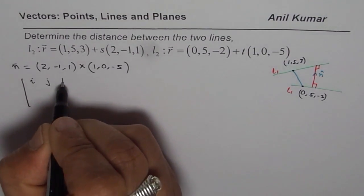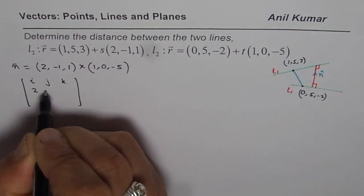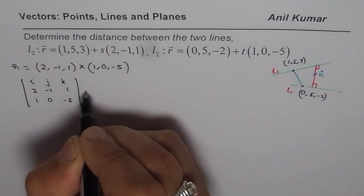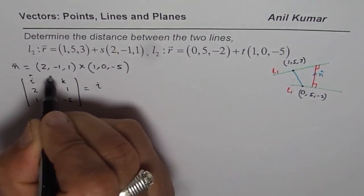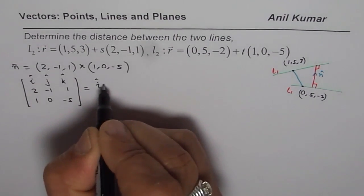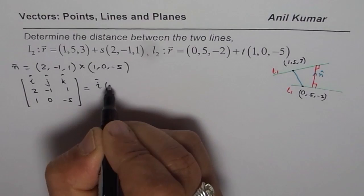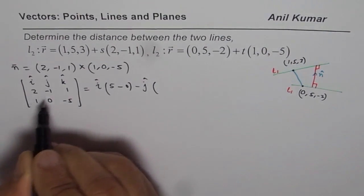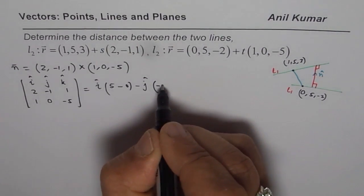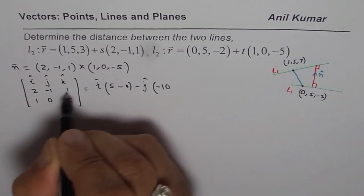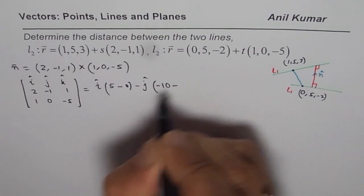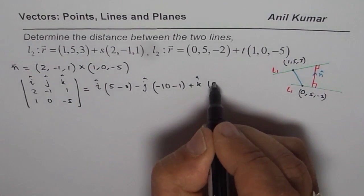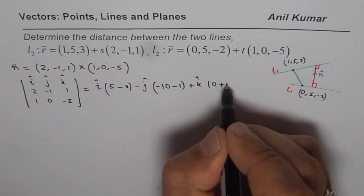So, we will say i, j, k and here we have 2, -1, 1 and 1, 0, -5. So, I will write this as i. These are the unit vectors, i, j, k. And 1 times -5, so that becomes plus 5 minus 0 minus j. 2 times -5 is -10, this is with negative and minus of minus becomes -1, plus k. 2 times 0, 0 minus minus becomes plus 1.